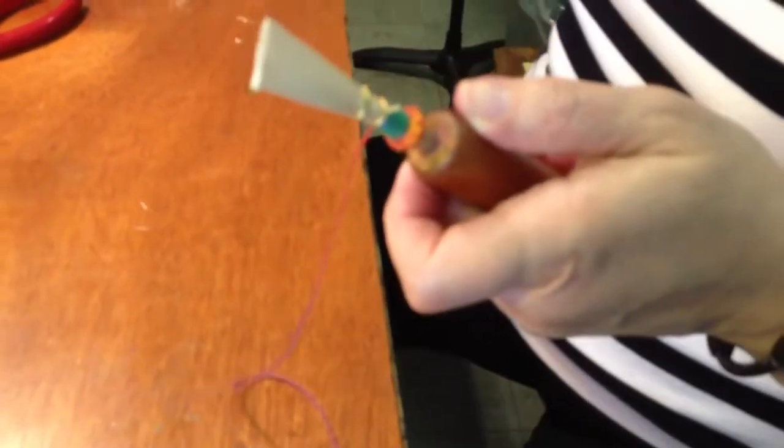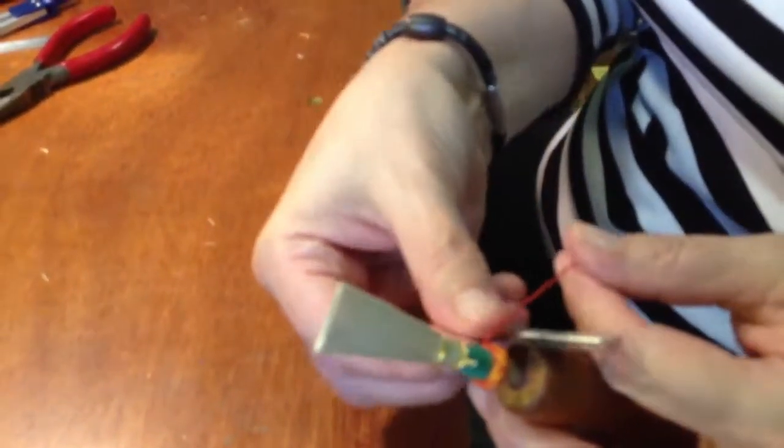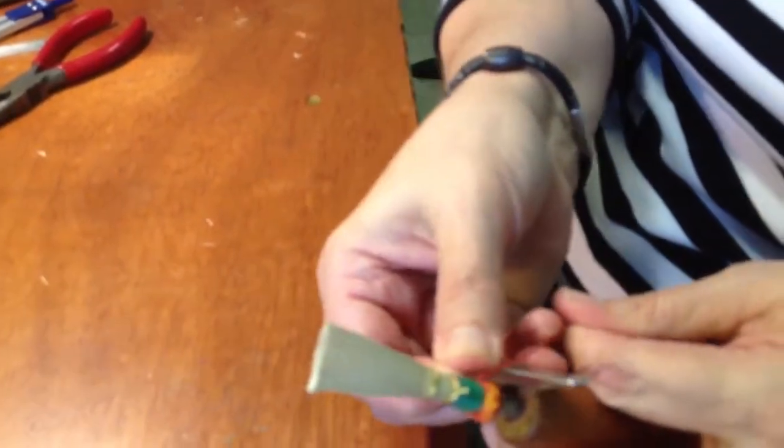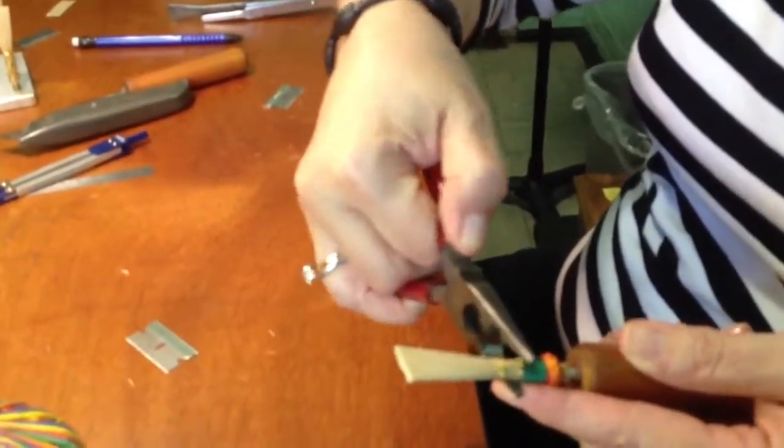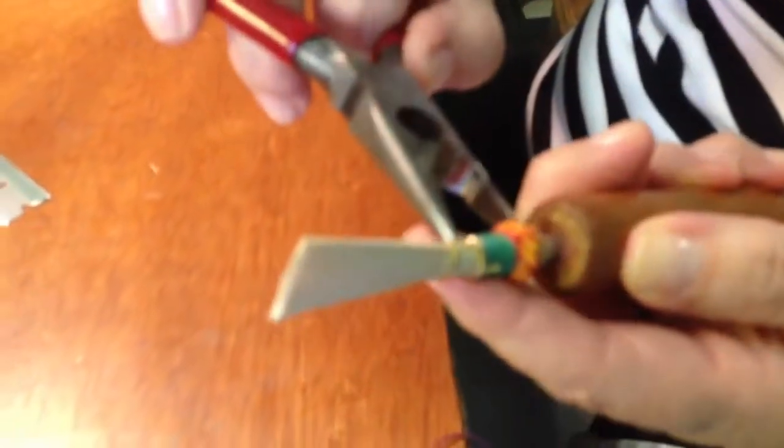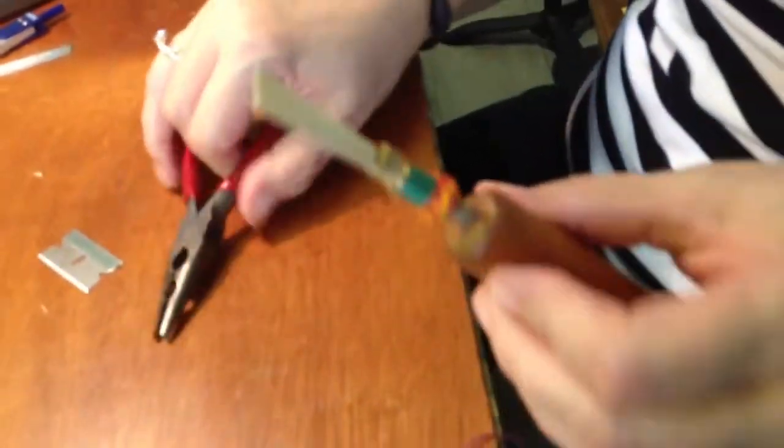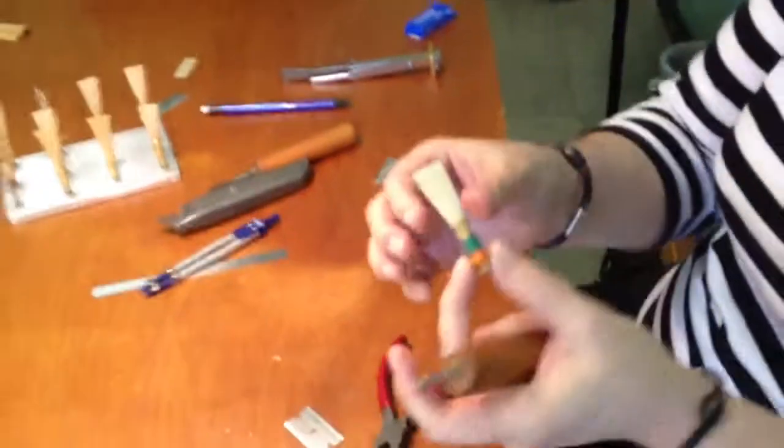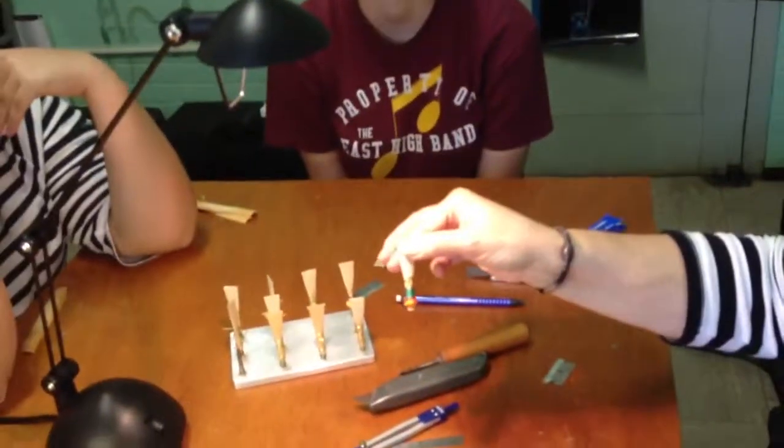And then what we do is take a razor blade and cut it off. Take your pliers. Fold down that first wire, or sorry, the second wire. Make sure that the wire is secure and straight. Take it off the mandrel. And you now have the pretty Turk's head.